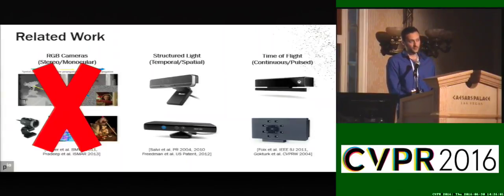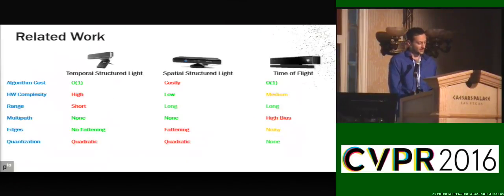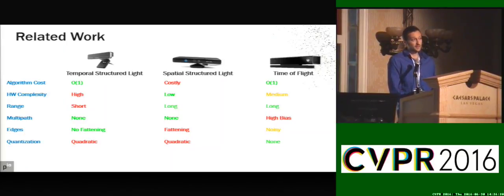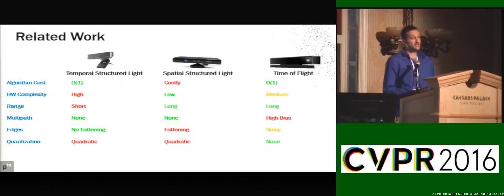Let's compare the pros and cons of these technologies. Temporal structural light, such as Intel F200, has a very cheap O(1) algorithm to compute depth maps. However, the hardware complexity is higher and the range is very limited. Moreover, it requires multiple shots of the same scene to produce a single depth map, which means there are issues when you have moving objects or moving cameras.